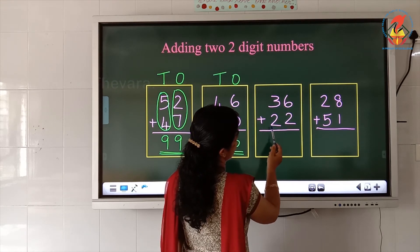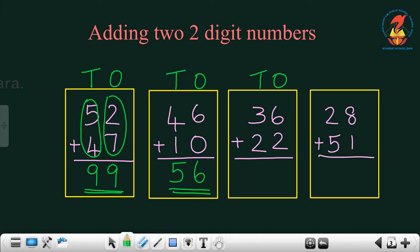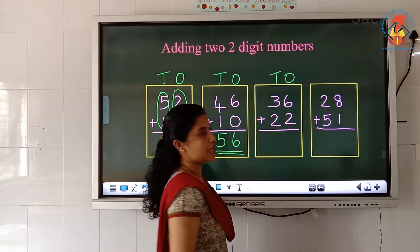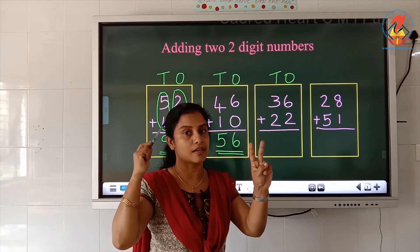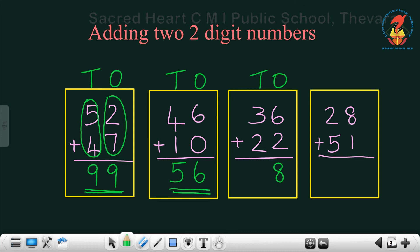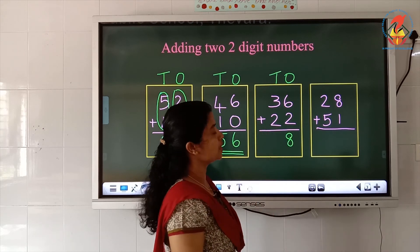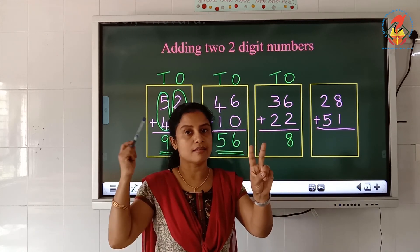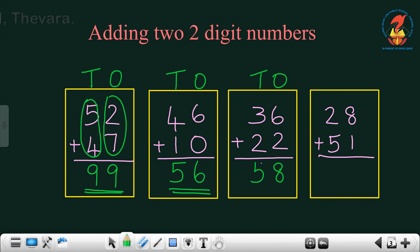36 plus 22. First we have to write the place value — this is the ones place and this is the tens place. Which are the numbers in the ones place? 6 and 2. So first we have to add 6 plus 2. How will you do 6 plus 2? 2 in the hand and 6 in the mind: 8. So 8 in the ones place. Which are the numbers in the tens place? 3 and 2. How will you do 3 plus 2? 2 in the hand and 3 in the mind — after 3: 4, 5. So 5 in the tens place. The answer is 58.